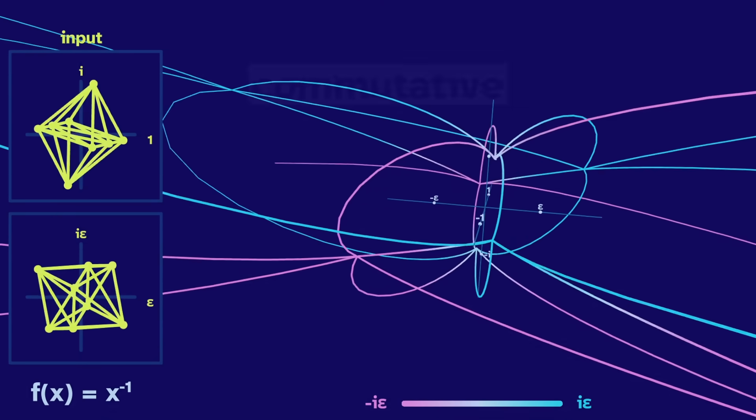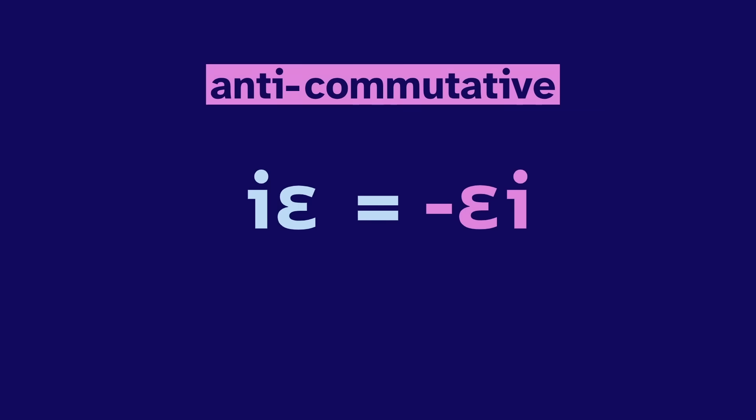So far, we've assumed things are commutative. The imagidual is equal to the dualinary. But we could instead define the imagidual to be the negative of the dualinary. Here, they're anti-commutative. They prefer to work from home.